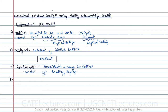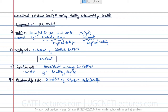Then we have something called a relationship set. A relationship set is a collection of similar relationships. Relationship sets are generally denoted by a diamond-like figure. For example, the relationship 'read' is representing a relationship set.